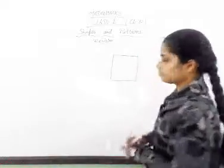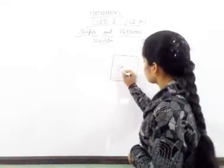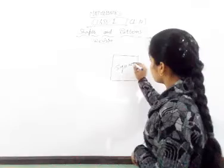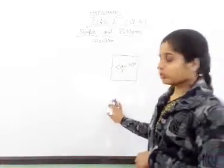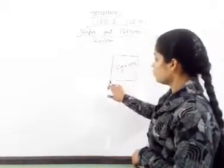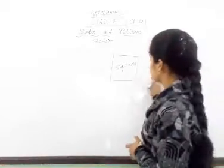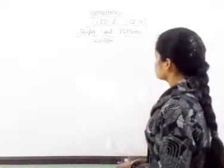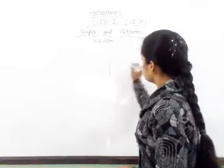What is it? It's a square. That is a square with four sides and four vertices.